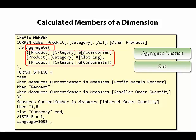A set is a collection of members from the same dimension and hierarchy. Notice the set is enclosed in braces. Here we're defining a set that contains specific members: accessories, clothing, and components. In other words, we have explicitly listed every member of the category hierarchy except for bikes and the all member.